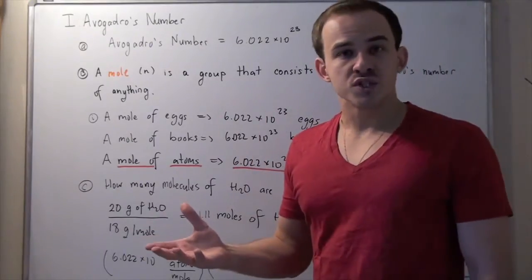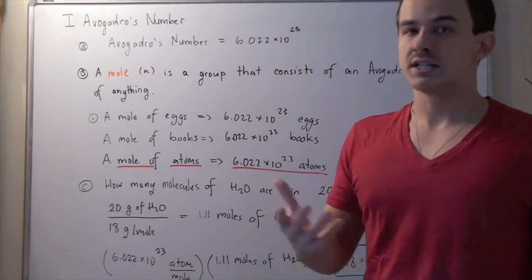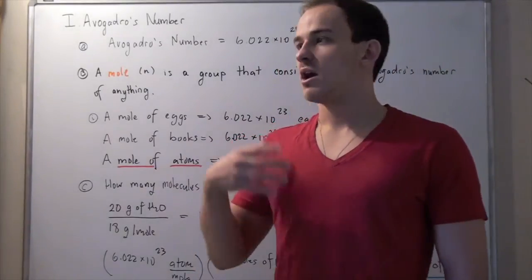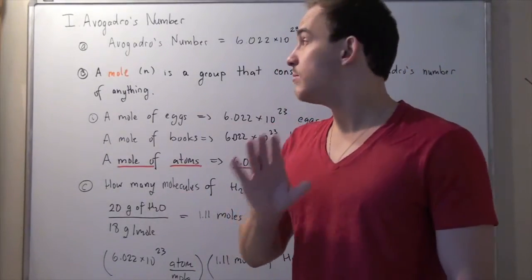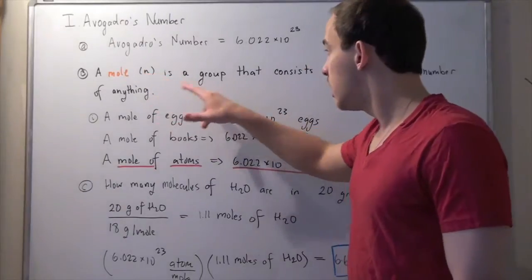We could have a dozen roses, a dozen eggs, a dozen chickens, a dozen chairs, cars, books, people. In the same way, we could have a mole of anything.